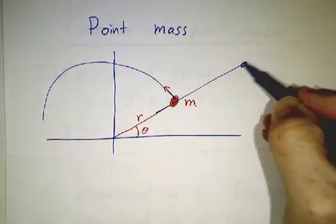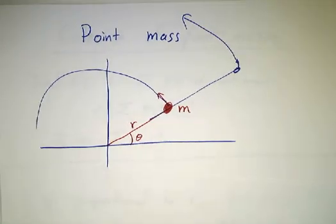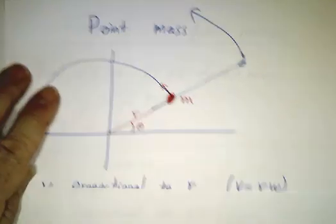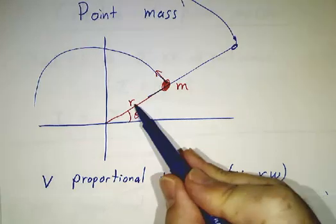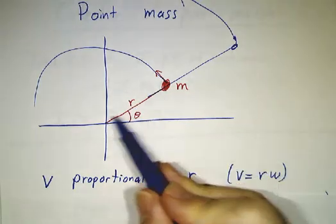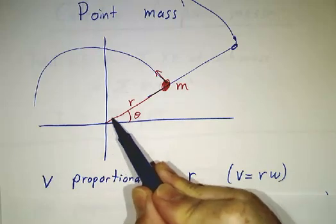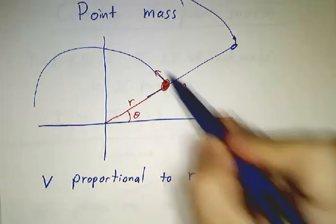If the mass was twice as far, it would traverse twice as much distance every revolution. So in particular, the velocity of this mass is proportional to how far it is from the origin. The things that are close to the origin are moving kind of slowly. They take a second to go this short distance. The things that are far away take a second to go a much larger distance.